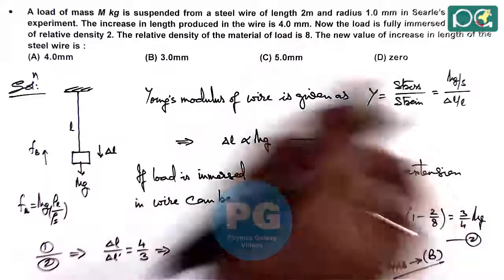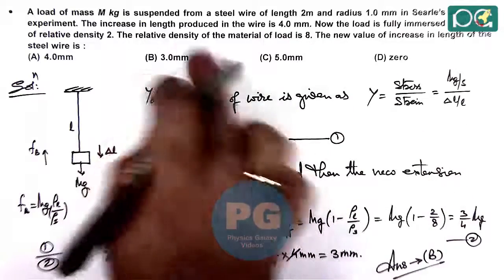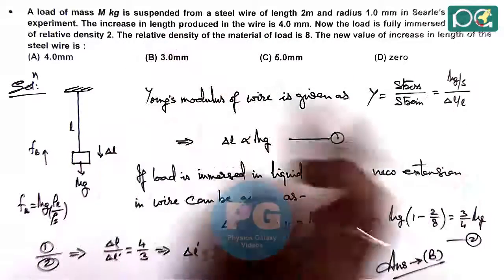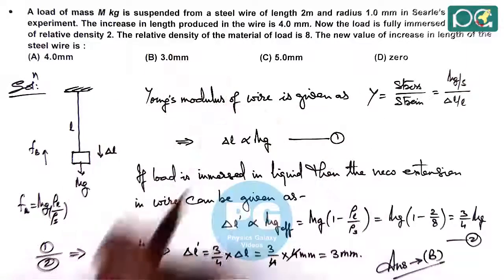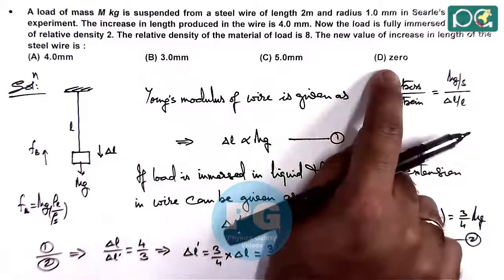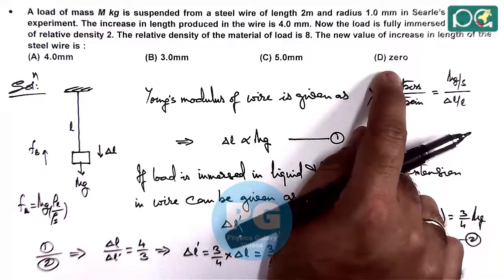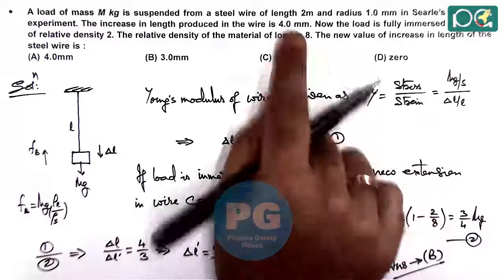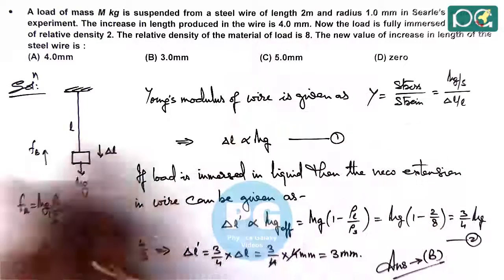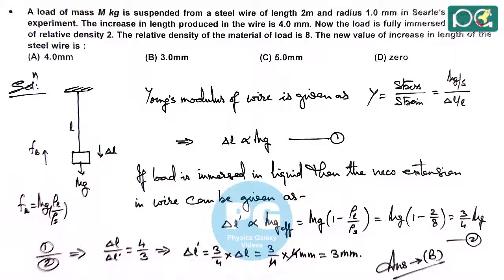So less than 4 mm there is only one reading 3 mm which can directly be marked as answer and you can proceed in examination. You can save time of all this calculation because zero can never be the answer since effective weight certainly produces some extension which is less than 4 mm. However, for conceptual analysis we have solved this and calculated the final numerical value.